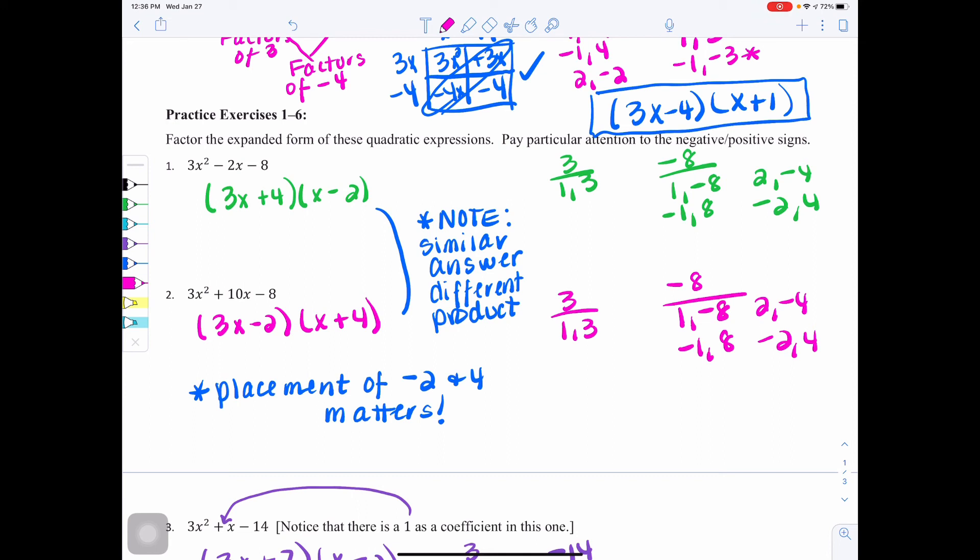Now I did not show the multiplying step to check it. You don't have to either. You can show it if you want to, but you can also just kind of do it in your head like you saw me demonstrate when we were doing the actual example problems. Okay, so 3x plus 4 times x minus 2. For number 2, you should have 3x minus 2 times x plus 4.